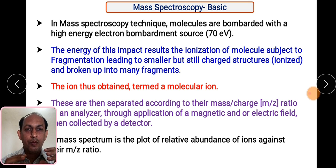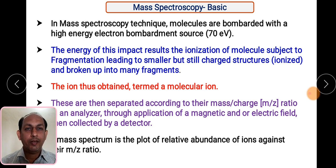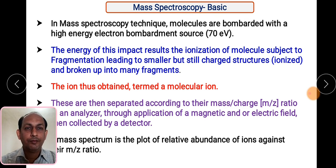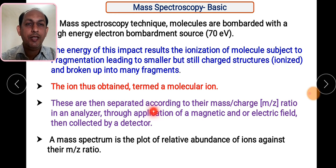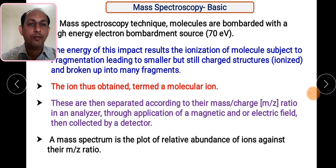That particular beam has energy up to 70 electron volts, and due to this impact of high energy electron beam, that particular molecule gets ionized and subjected to fragmentation, leading to smaller but still charged structures and broken into many fragments. The ions obtained are called molecular ions. Whatever the first ion is formed by loss of one electron is called a molecular ion, also called a molecular ion peak. These ions are then separated according to mass-to-charge ratio in the analyzer through application of magnetic and electric field, and the mass spectrum is a plot of relative abundance of ions against mass-to-charge ratio.